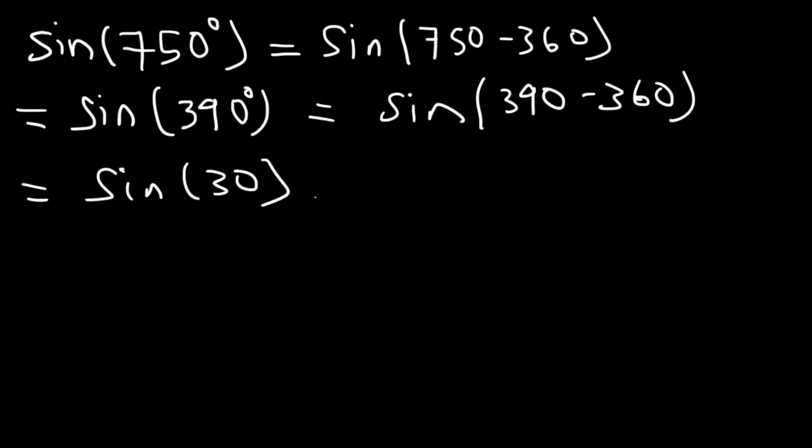So sine 30, sine 390, sine 750, they all equal each other. And using the unit circle, we know that sine 30 is 1 half. So therefore sine 750 is also 1 half.